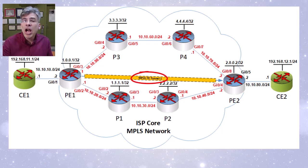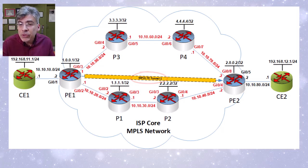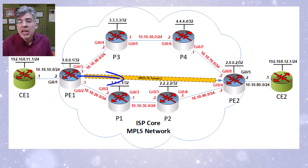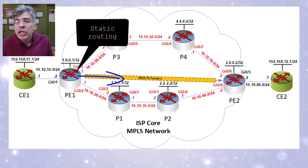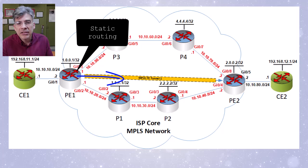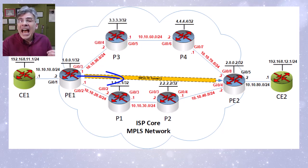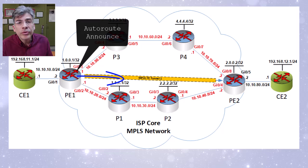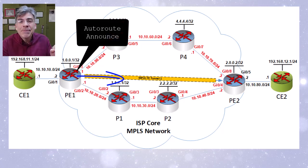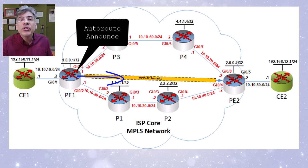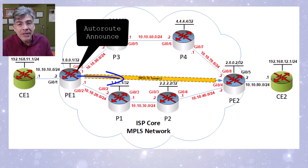Once our tunnels are up and running, however, they don't actually do anything unless we route traffic through them. In the previous video we took a look at how to use static routing to route traffic down our LSP tunnels. In this video we'll be taking a look at a feature called auto route announce, which is an MPLS traffic engineering specific feature that enables the TE tunnel to take part in the underlying IGP.